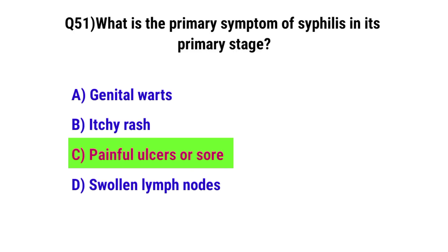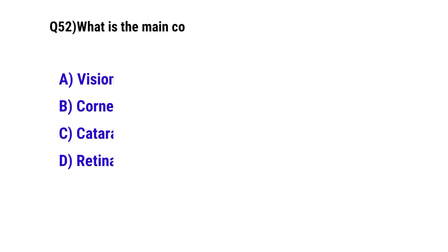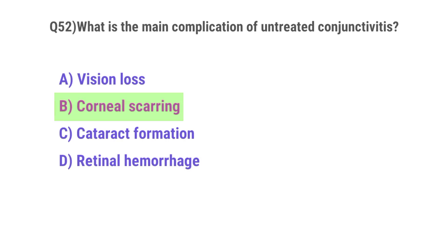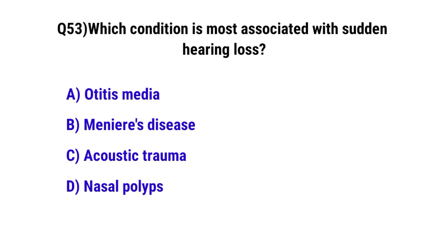Question No. 52: What is the main complication of untreated conjunctivitis? The correct option is B: corneal scarring. Question No. 53: Which condition is most associated with sudden hearing loss? The correct option is C: acoustic trauma.